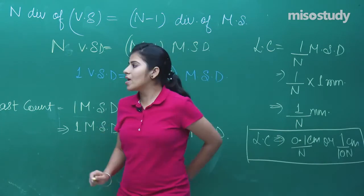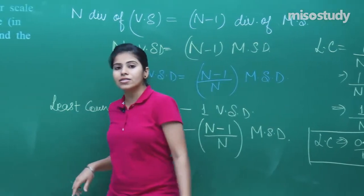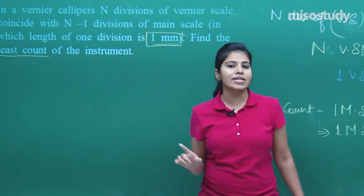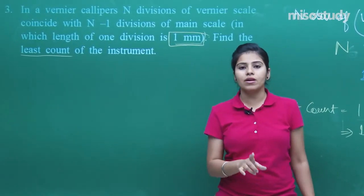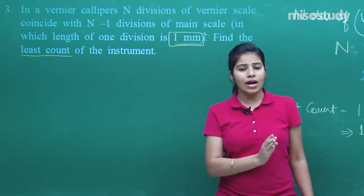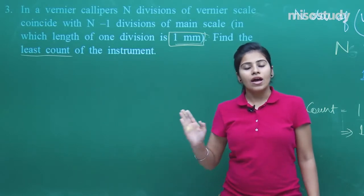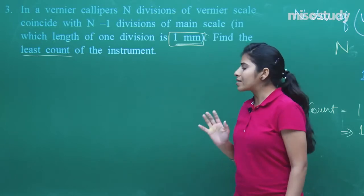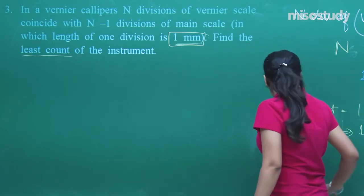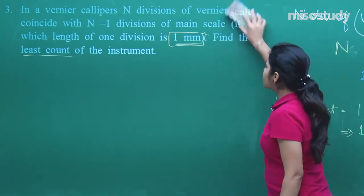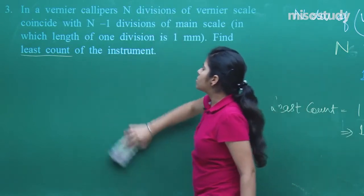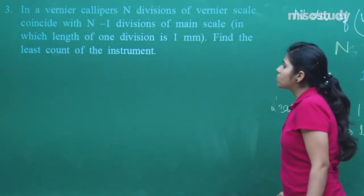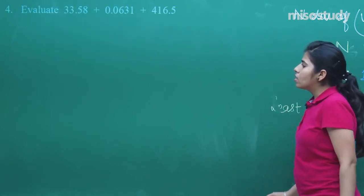This is how we find the least count of the vernier caliper. I have given a complete lecture on the vernier caliper and screw gauge, covering all kinds of errors. Go through those lectures to understand how these types of questions can arise from that topic. Let us move to the next question.